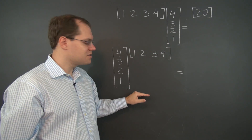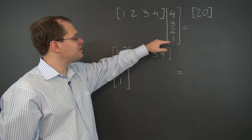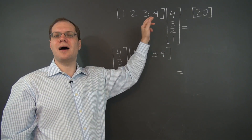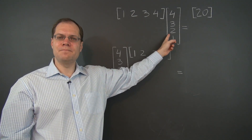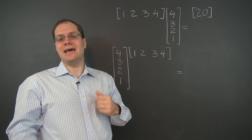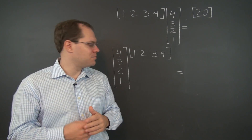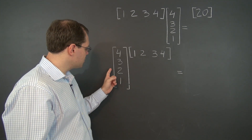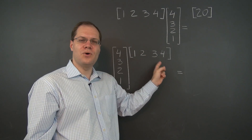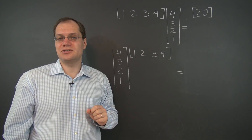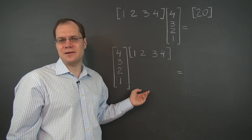Now we're going to consider the product of the same two matrices in the opposite order. The nice thing about matrices whose dimensions are opposite of each other — this one is 1 by 4 and this one is 4 by 1 — is that they can be multiplied in any order. If you put them in any order, that product will be compatible. So here we have them where the first one is a 4 by 1 and the second one is 1 by 4, so inner dimensions match once again, and these matrices are compatible in this product.